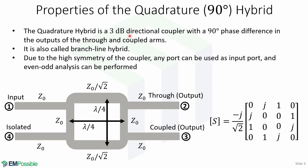The Quadrature-Hybrid is a 3 dB directional coupler with a 90-degree phase difference in the outputs of the through and coupled arms. It is also called a branch-line hybrid. This type of directional coupler is often made in microstrip-line or strip-line form, as shown in this picture. Here you can see ports 1, 2, 3, and 4 with their respective transmission line with impedance Z0.